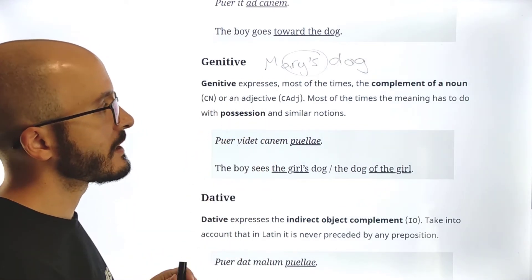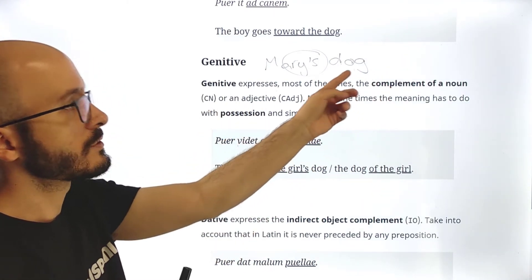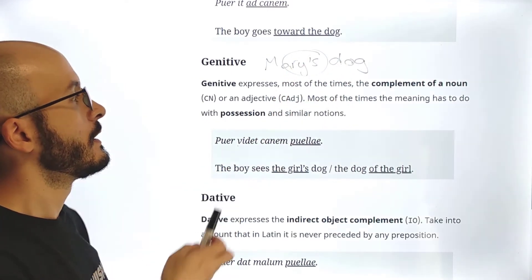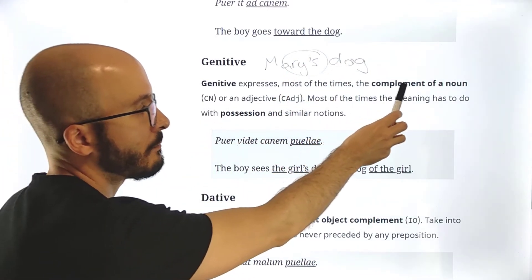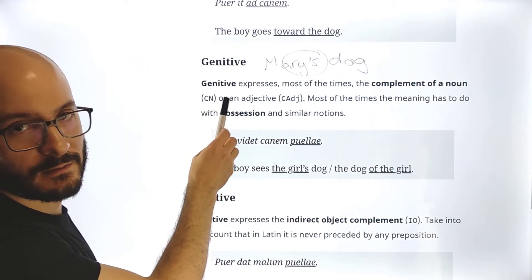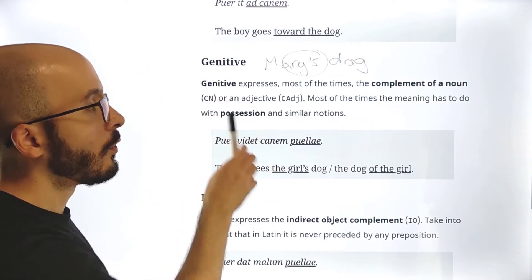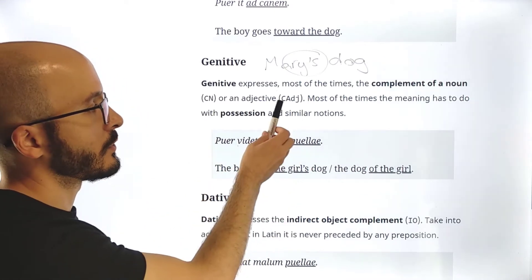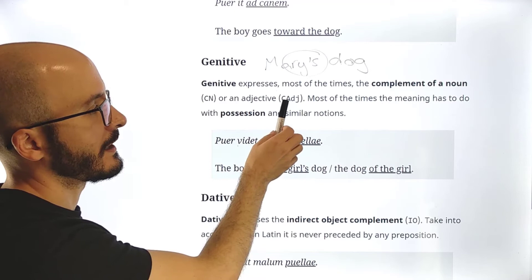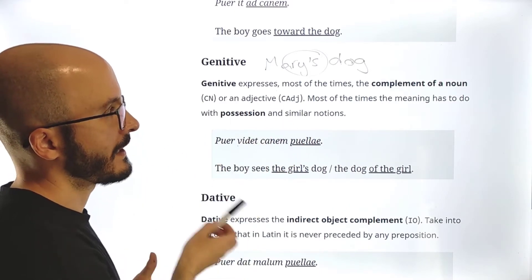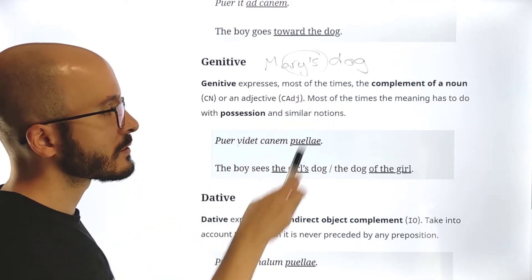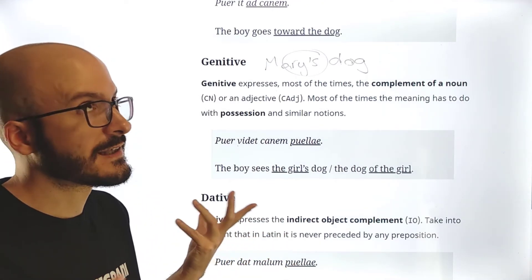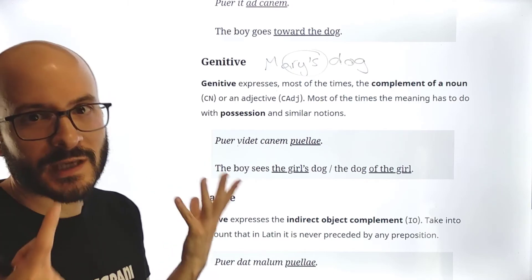So genitive expresses most of the times the complement of a noun. So for example, this is a noun. So this is the complement of this noun. So when it is the complement of a noun, we just say CN, complement noun. Or it can also be the complement of an adjective, which we will just write like this: C-A-T-J. And as we can see in the example, most of the times the meaning has to do with possession and similar notions.